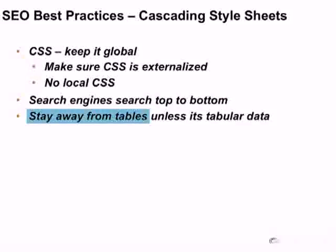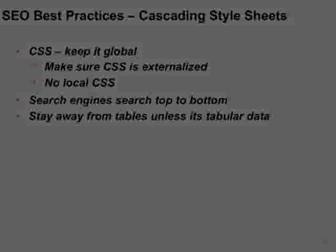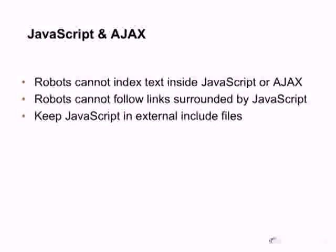Stay away from tables unless it's actually tabular data. Tables were used more often in the past for design, but that's no longer a common practice. With JavaScript, a few notes: most robots have a hard time with JavaScript or Ajax, so stay away from it or include options for search engines to see that content — including a text version. Links surrounded by JavaScript are generally handled well now, but when in doubt, call JavaScript from external include files. Test whether Google is actually accessing content within your JavaScript, and provide alternate ways to deliver content stored in Ajax or JavaScript to the search spider.